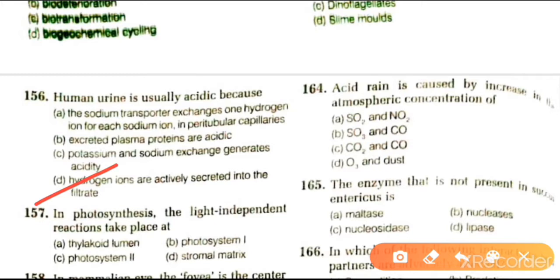Next question: in photosynthesis, the light-independent reaction takes place at thylakoid lumen, photosystem I, photosystem II, or stromal matrix. The answer is stromal matrix.